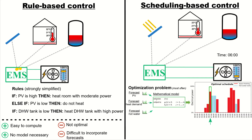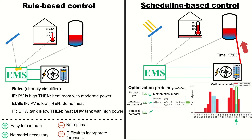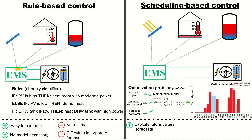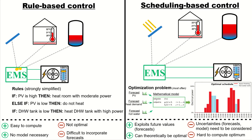For example at six o'clock the schedule tells us to heat up the building with high power, and later at 17 o'clock it tells us to heat up the hot water tank with moderate power. The scheduling approach has some benefits: it can exploit future values by using forecasts, and in theory it can be optimal. However, it also has drawbacks — uncertainties need to be considered and it's hard to compute the optimum.